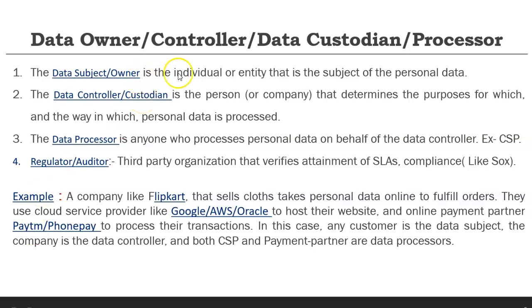The different types of roles in the cloud are: data owner, data controller, custodian, processor, and auditors. The data subject and data owner is the individual or entity whose data is being taken. The data controller or custodian is the person responsible to process or control the data — they have the authority and determine the purpose for which the data is being processed. The processor is anyone who processes the data on behalf of the controller. Regulatory auditors are third-party organizations that verify SLA compliance — for example, SOX audits — and these four roles are very important for the exam.